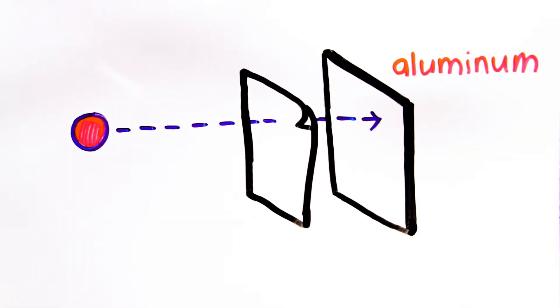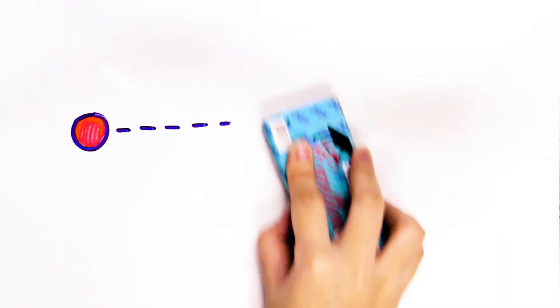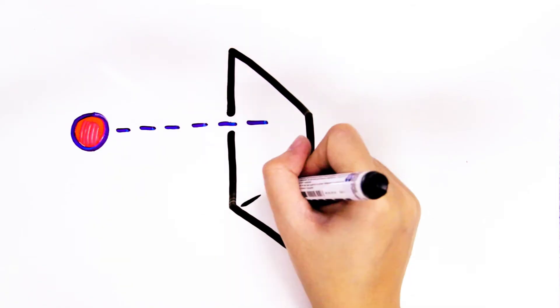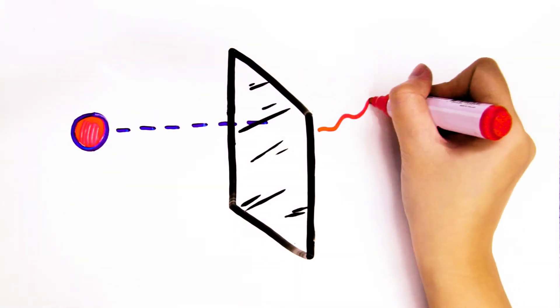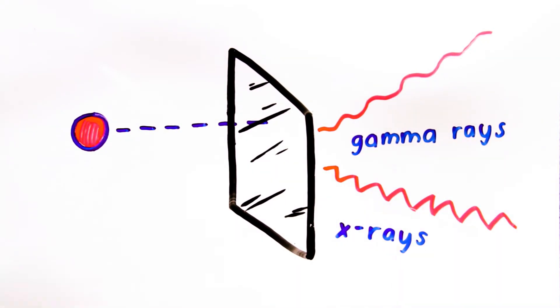Aluminum and other light materials can shield beta radiation. However, beta particles could also interact with the materials they hit, producing other radiation such as gamma rays and x-rays.